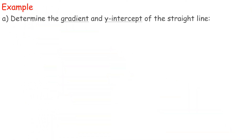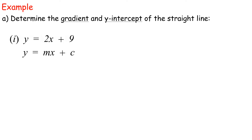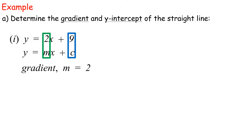Example a: Determine the gradient and y-intercept of the straight line. 1. y equals 2x plus 9. Compare with the formula y equals mx plus c: m equals 2 and c equals 9. Therefore, gradient m equals 2, and y-intercept c equals 9.